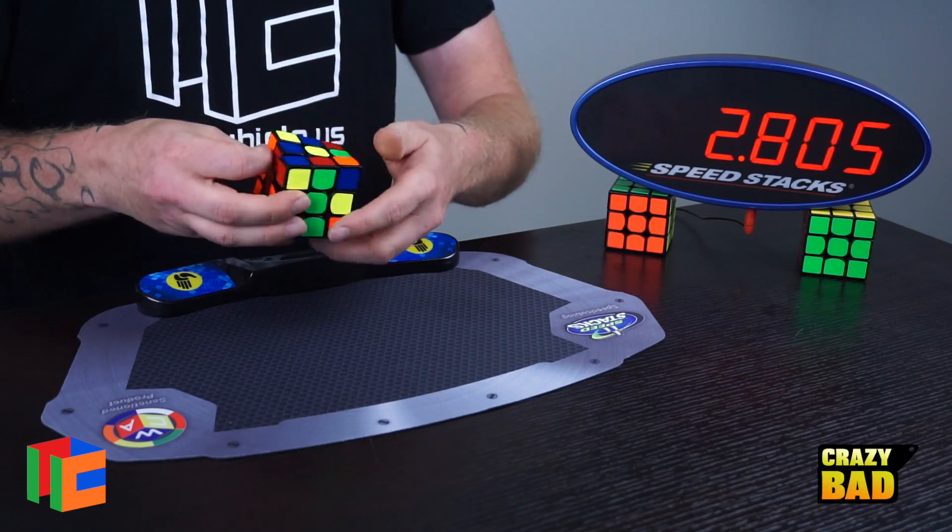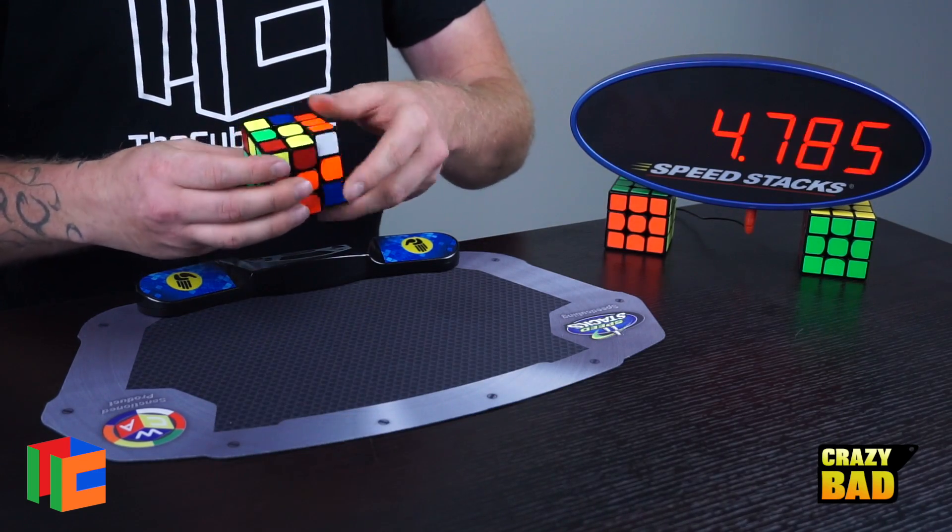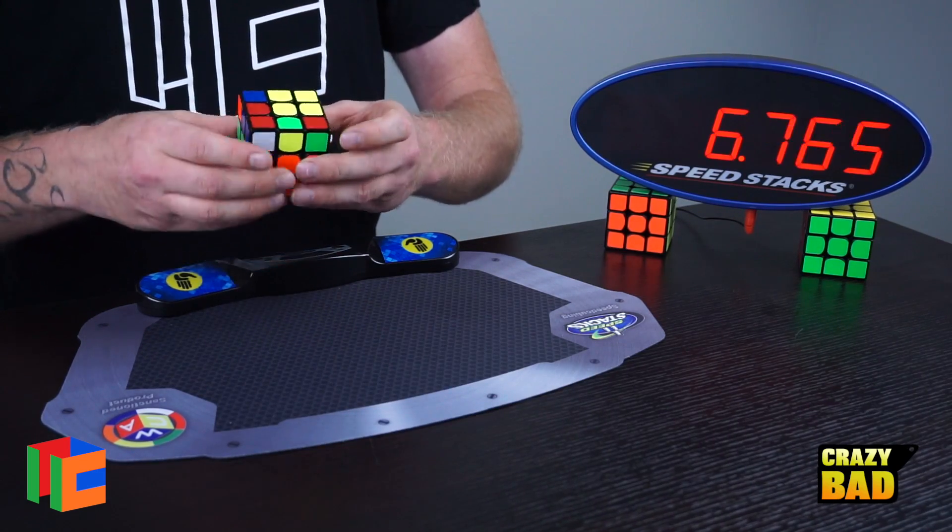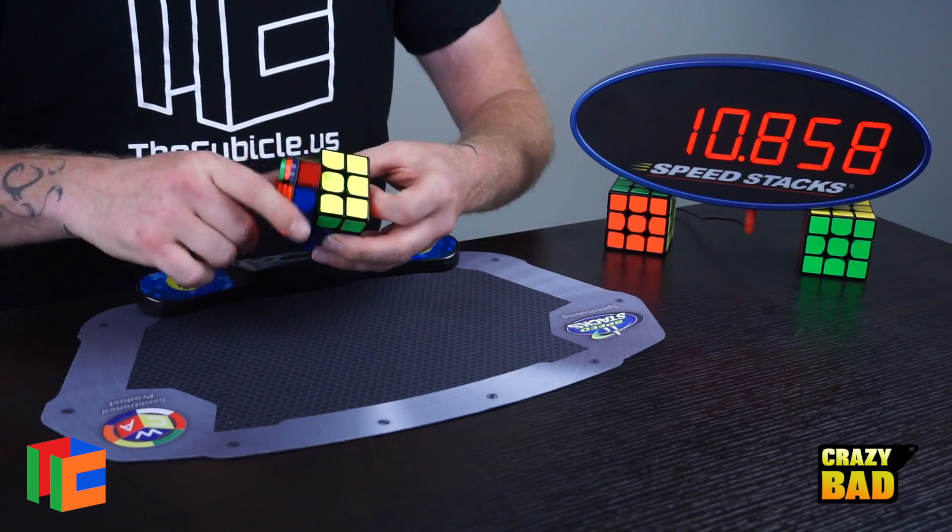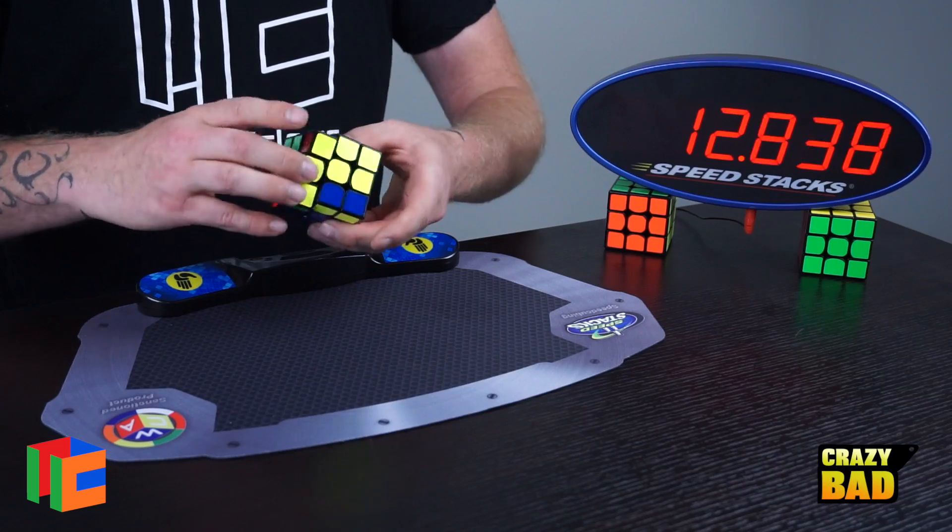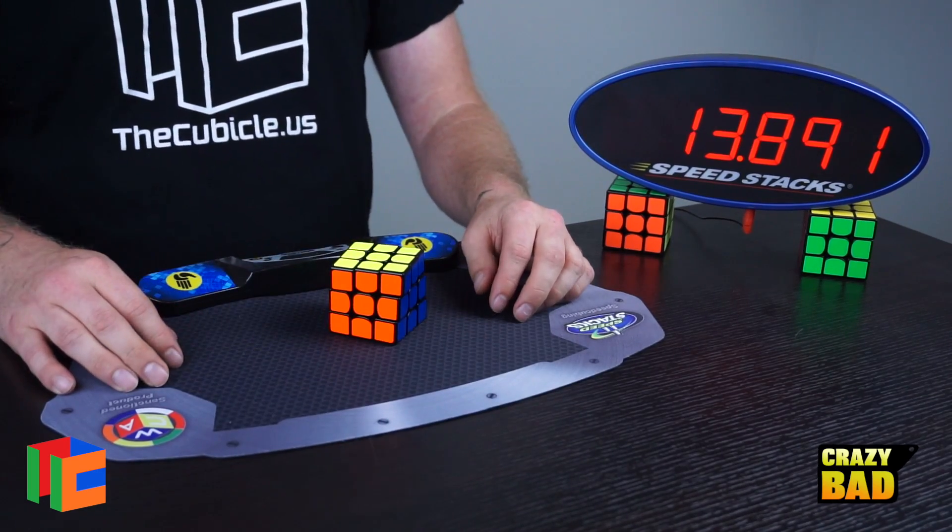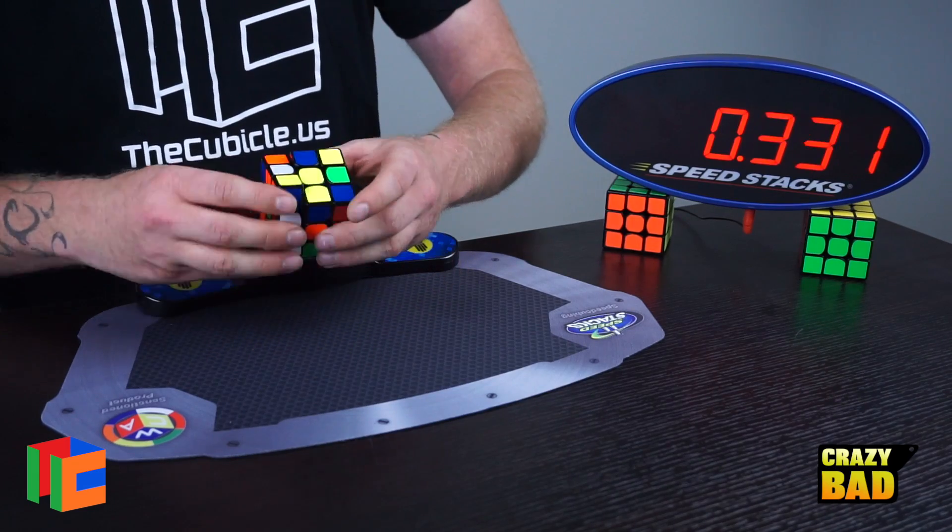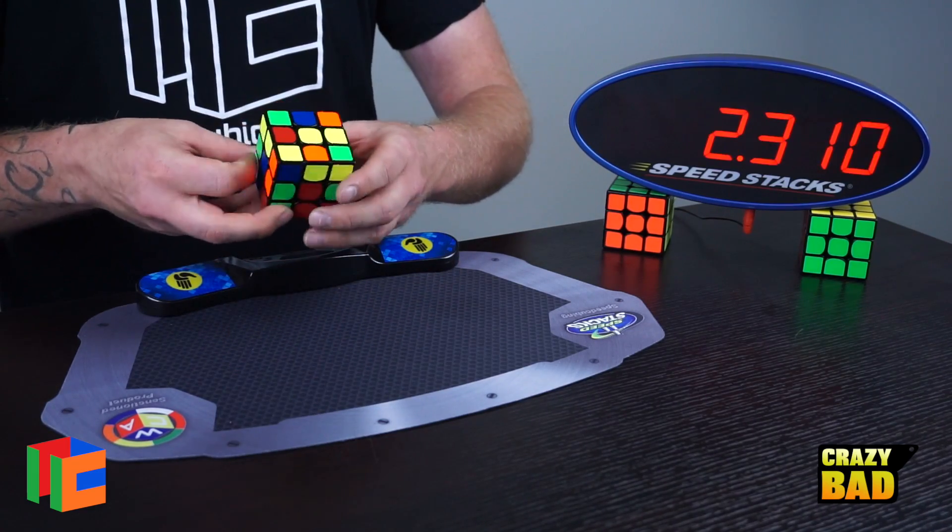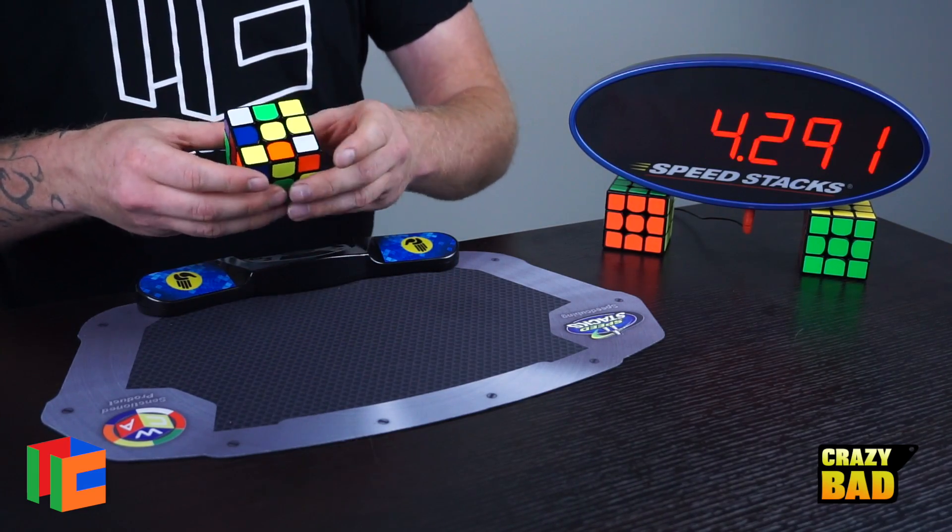So anyways, yeah, it made me realize that this puzzle, it's very good. It's definitely something to think about if I'm going to change my main at any point. Currently I'm using the Weylong GTS. This has a completely different feel to that. But as you saw in the beginning, it does not lock up. You can literally have it at any angle and cut right through either direction and also very easily, which is a great thing.